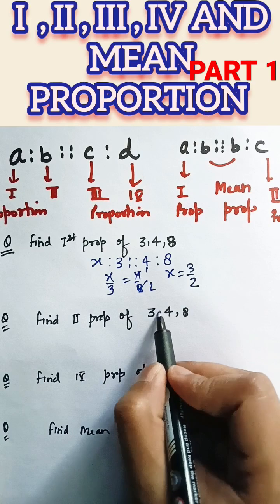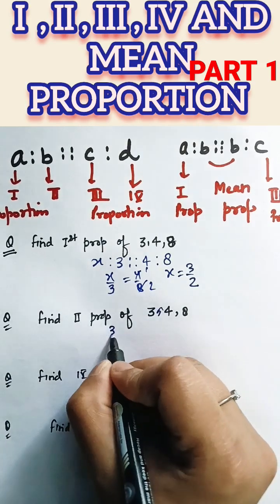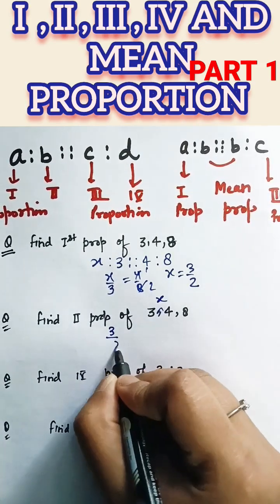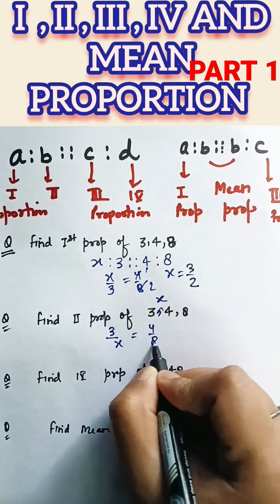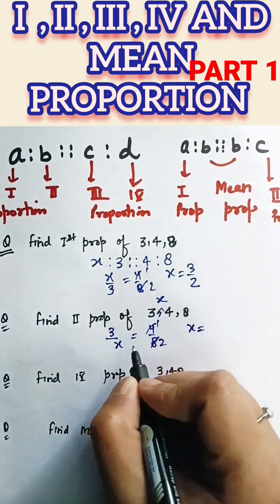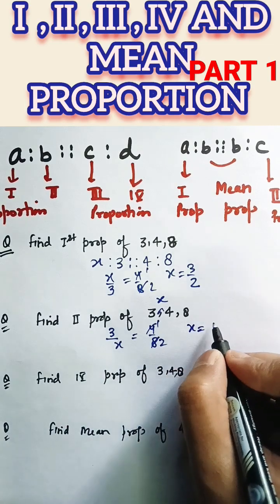Now for second proportion, second term means X. So 3 by X equal 4 by 8. So the answer is X equal 6.